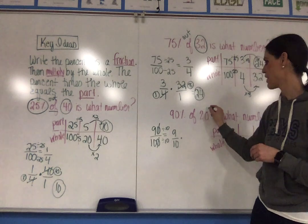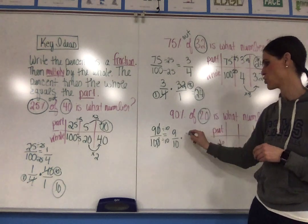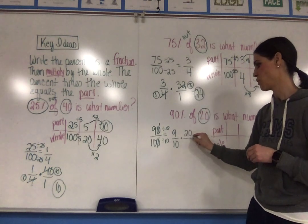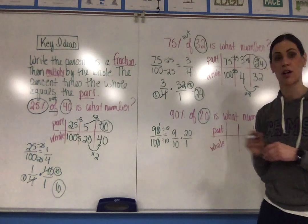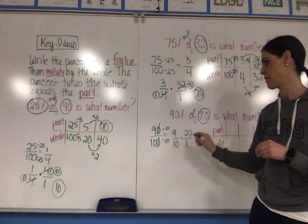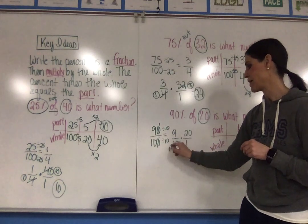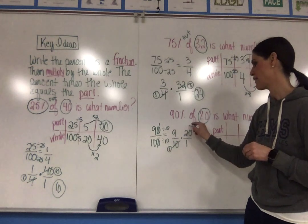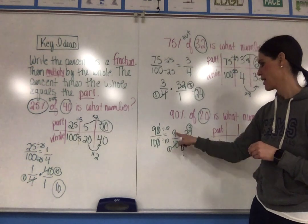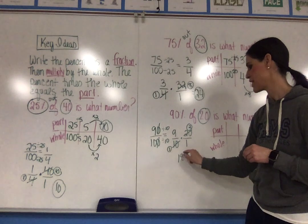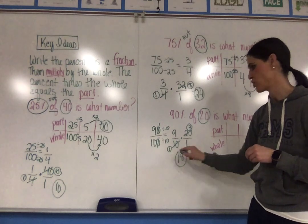Now I'm going to multiply that by my whole, which is 20. That's 20 over 1. I can cross reduce by dividing by the greatest common factor. 10 divided by 10 is 1. 20 divided by 10 is 2. And then when I multiply, I have 18 over 1. So that's just 18.